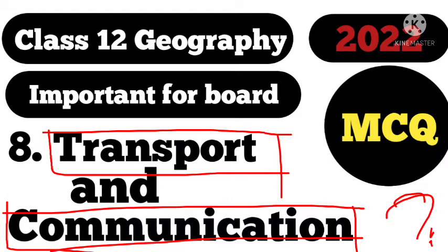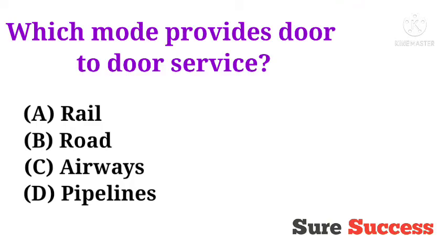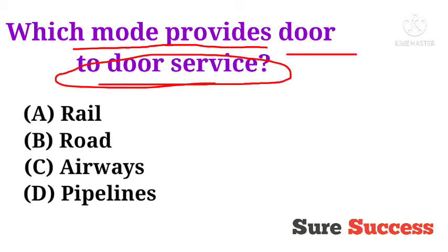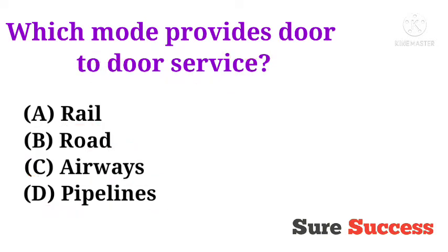Hope you are now clear with Transport and Communication. Let's begin. The first question is: Which mode provides door-to-door service? Options are rail, road, airways, and pipelines. The correct answer is road, because roadways provide door-to-door service.